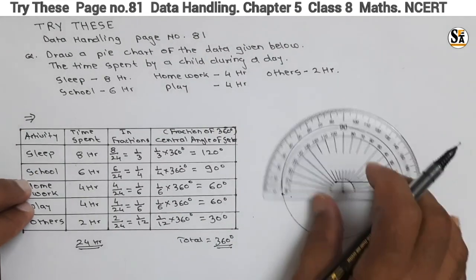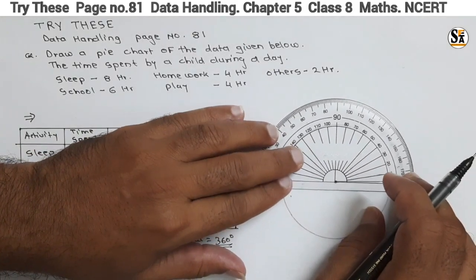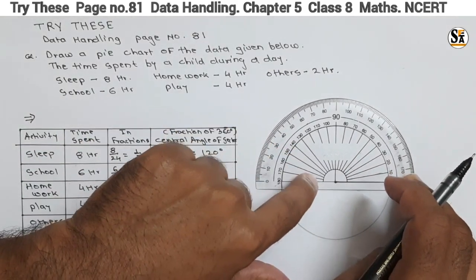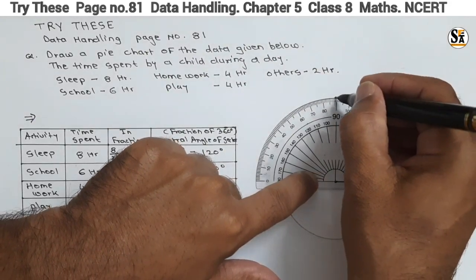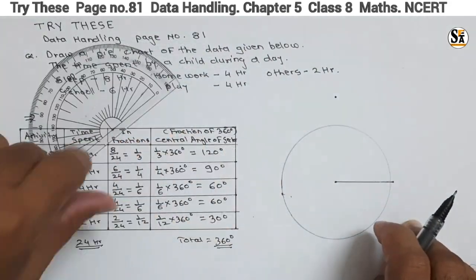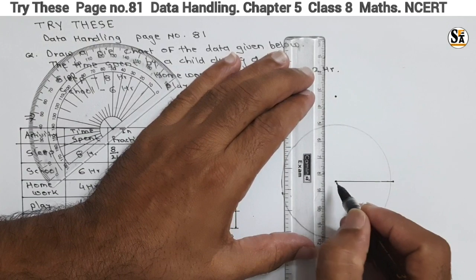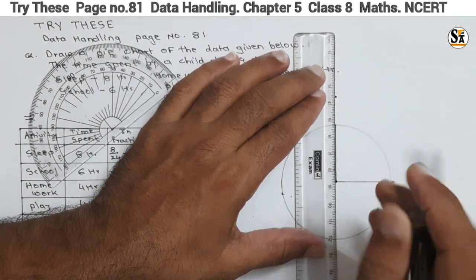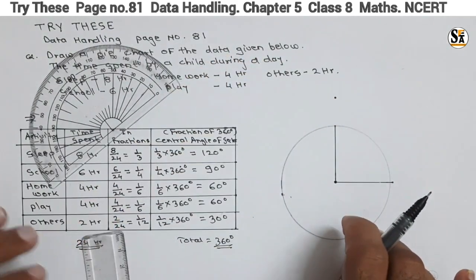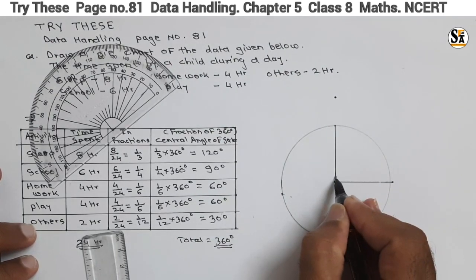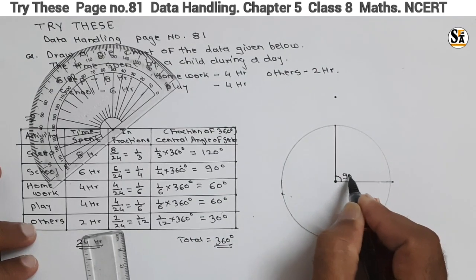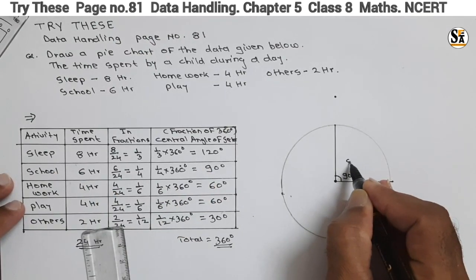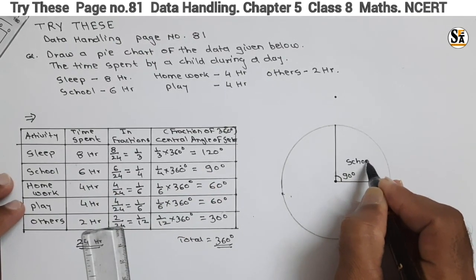Match the center point of the protractor with the center point of the circle, align it with the baseline, and mark 90 degrees. Join this point with the center to draw the line. This angle is 90 degrees, and this sector represents School.